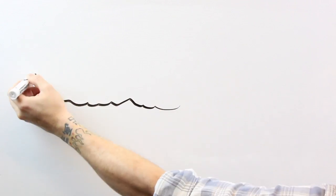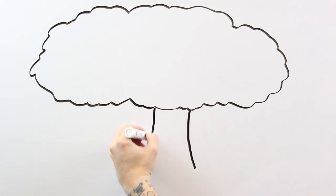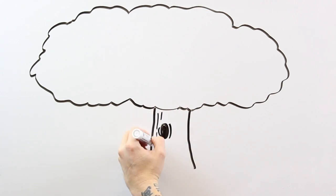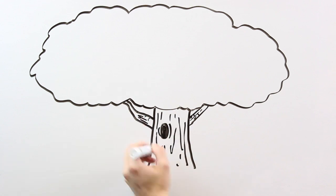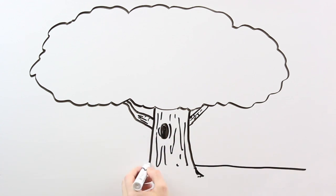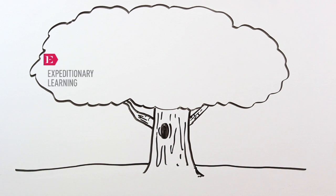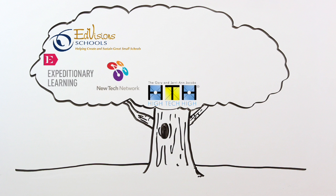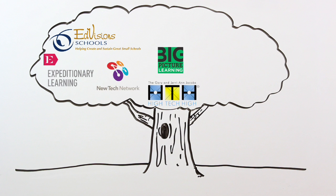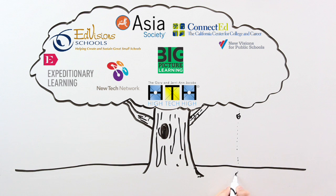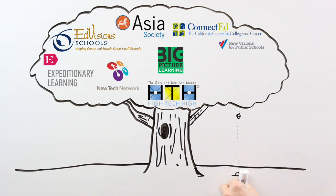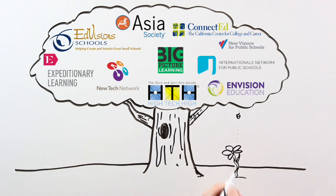One of the great things about this deeper learning MOOC is that we get to build on the expertise of a really great network of schools: Expeditionary Learning, EdVisions, New Tech Network, High Tech High, Big Picture Company, Asia Society, ConnectEd, New Visions Public Schools, The International Network, and Envision.